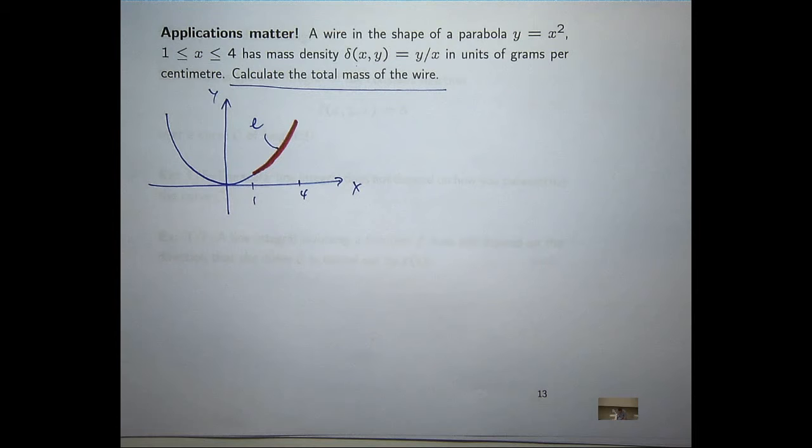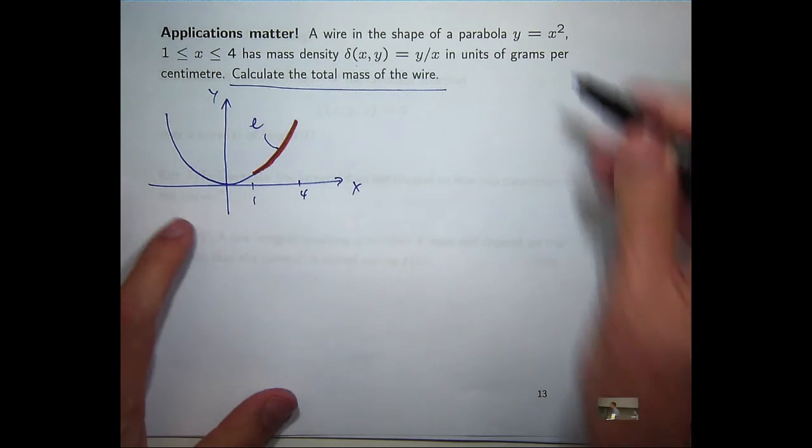Anyone have any idea how we can do it using some variable t? Anyone? Yes, who said that? Yes. Why? Why did you use t comma t squared? It's y equals x squared. Correct.